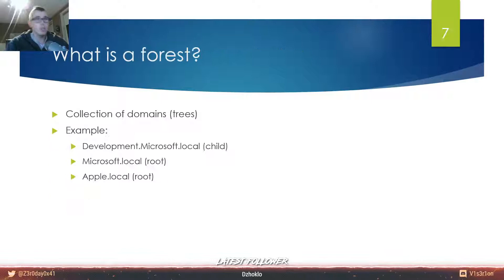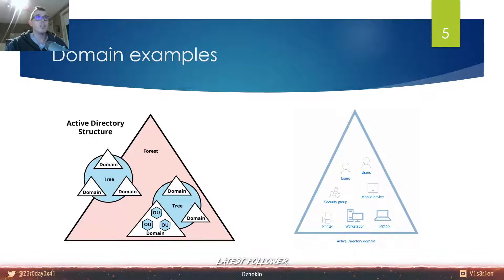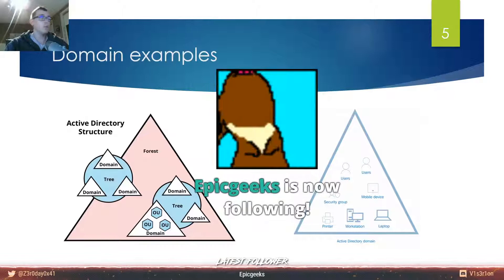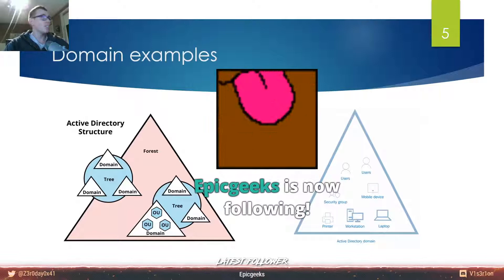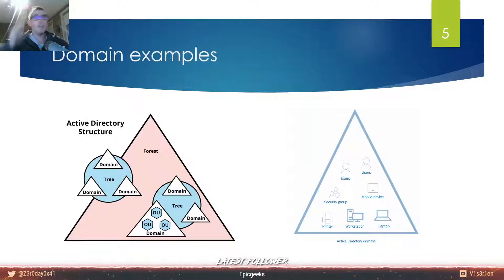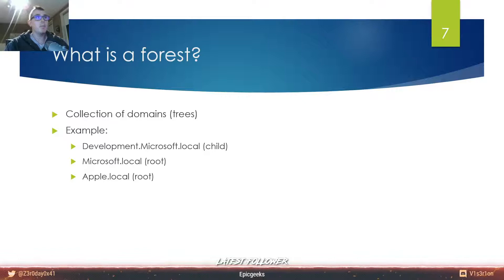Now what is a forest? As I showed you in the picture, a forest is the big triangle - that is the security boundary. Within the forest you can have multiple domains. You can also have multiple forests, so you can have forest one and forest two, and you can have trust relationships between them. Remember that within two forests you can have trust relationships - for example forest one is allowed to view objects in forest two, but forest two cannot see anything from forest one. That is one kind of trust.